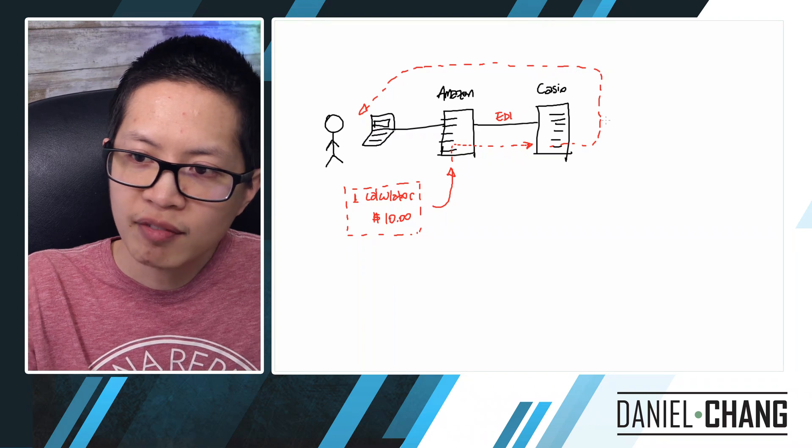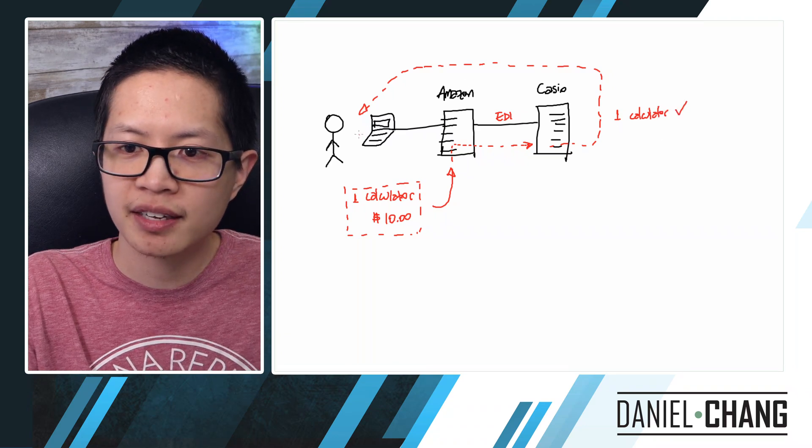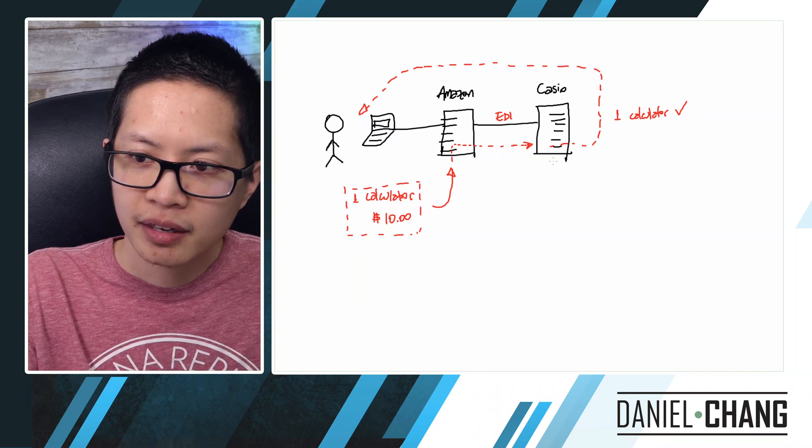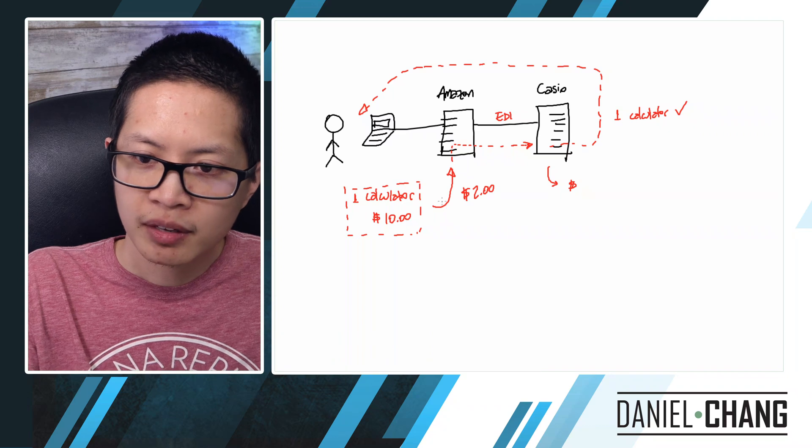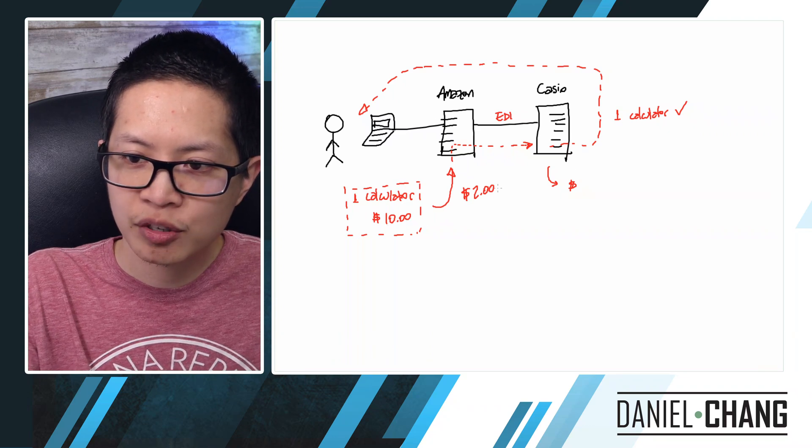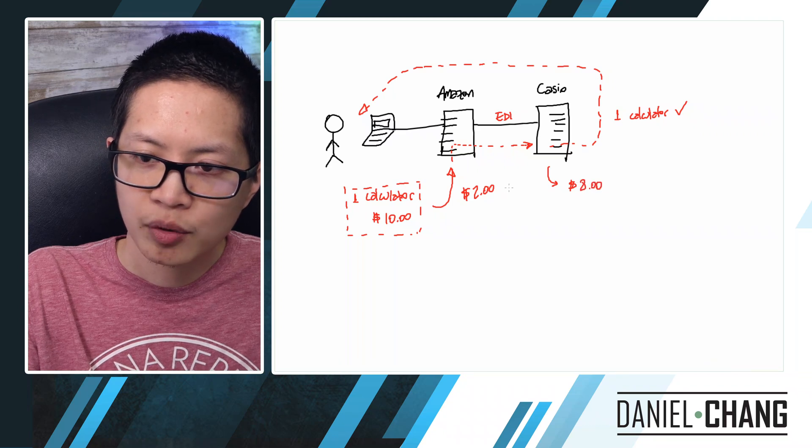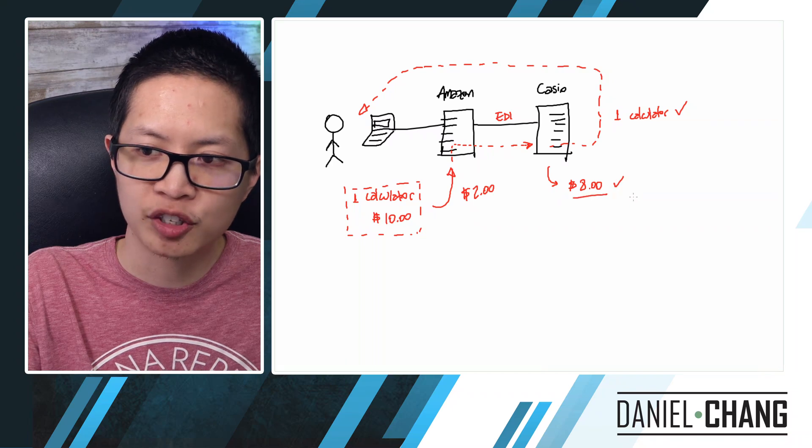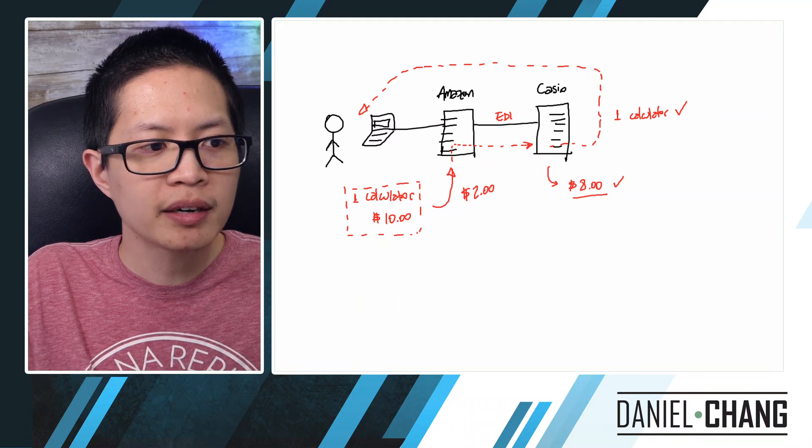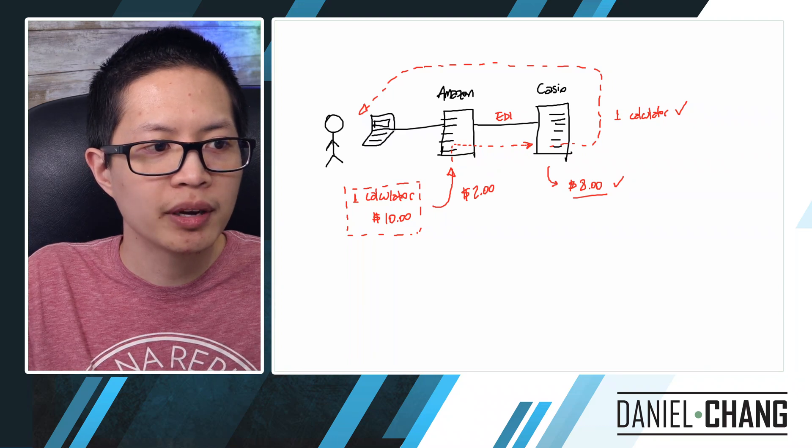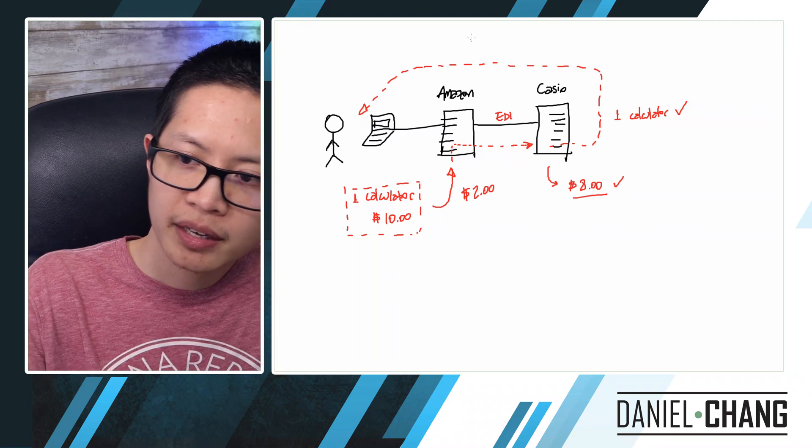So Casio will have to make sure that at least one calculator is correct. Because what happens if suddenly they send 10 calculators to the customer because something happened in between? But at the same time, Casio needs to make money. So let's say, for example, Amazon makes $2 out of that transaction. So Amazon charged $10 to the customer, Amazon takes $2. So they send that to Casio and Amazon, because Amazon is the one who collected the money, they send to Casio the eight remaining dollars. Well, Casio has to make sure that they are receiving the $8 that they are supposed to.